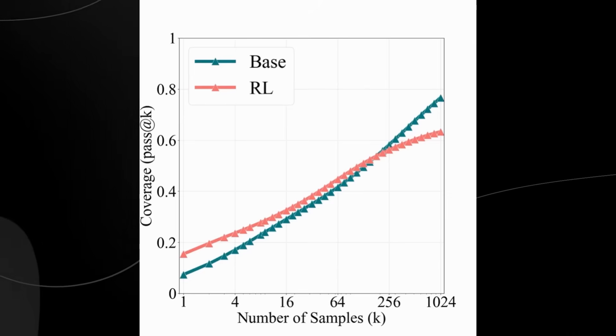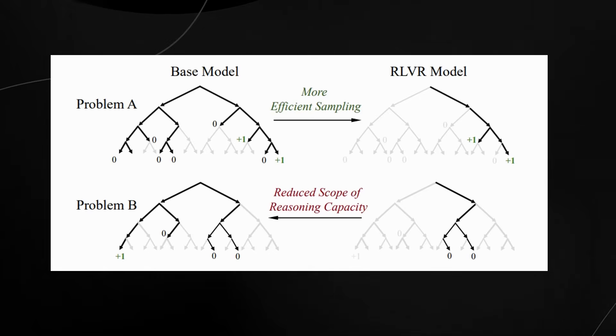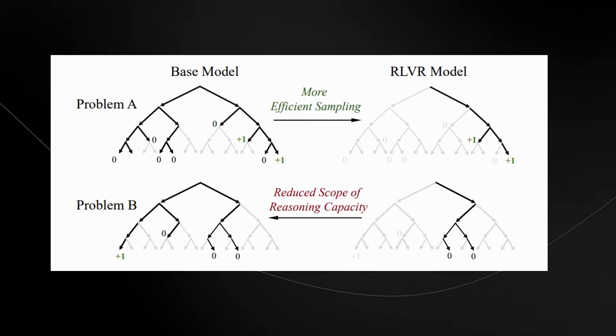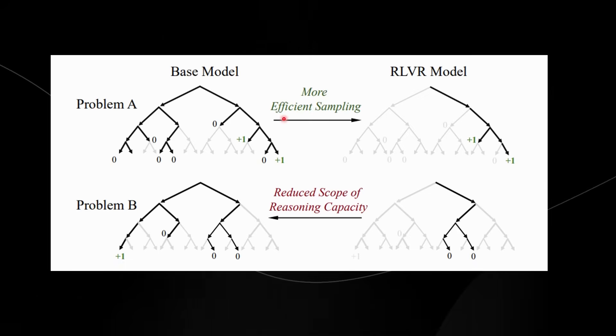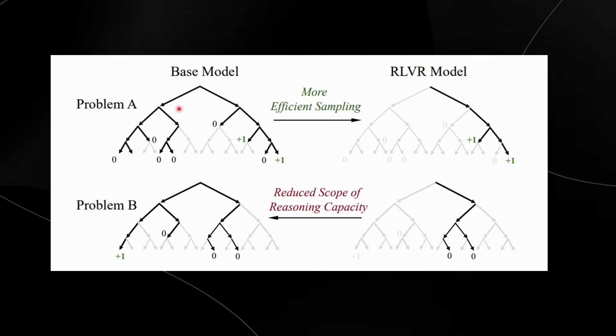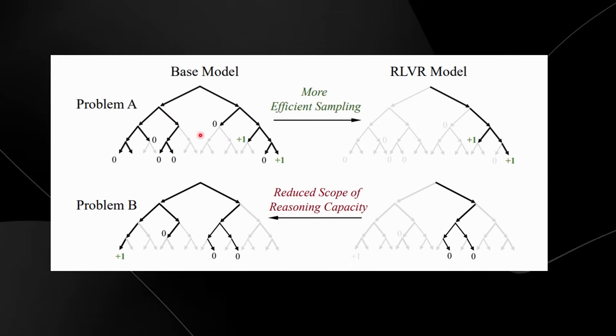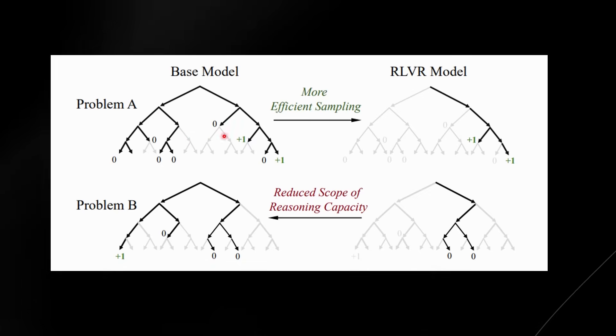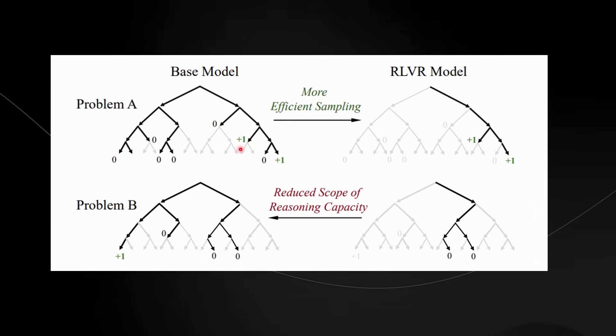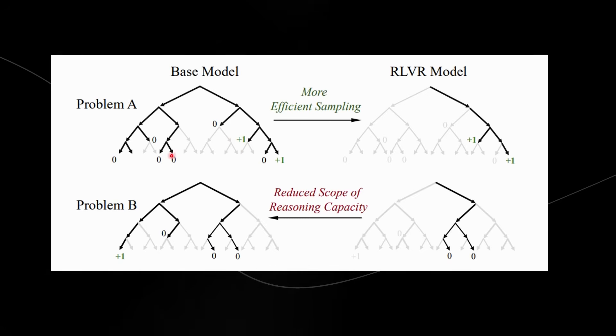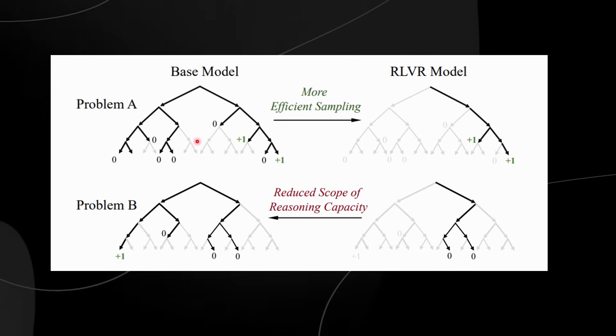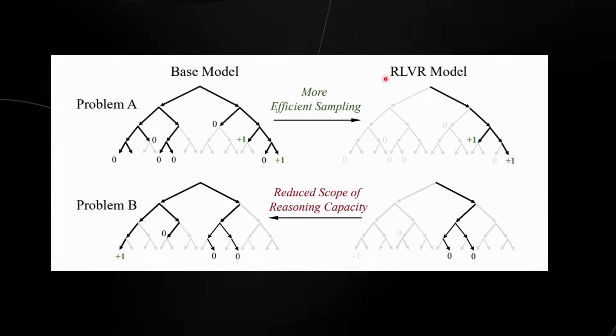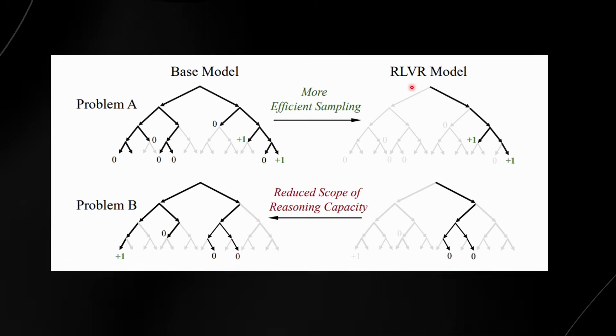Now let me explain it to you guys even more. So this is an image that they have in the paper, and this is where you are seeing essentially two decision trees. So these are the paths that a model can take when it chooses to solve a problem, and each node is a step in the model's reasoning. Plus one, that we can see right here, that basically means that the model has a correct answer, and O means that the model received a wrong answer.